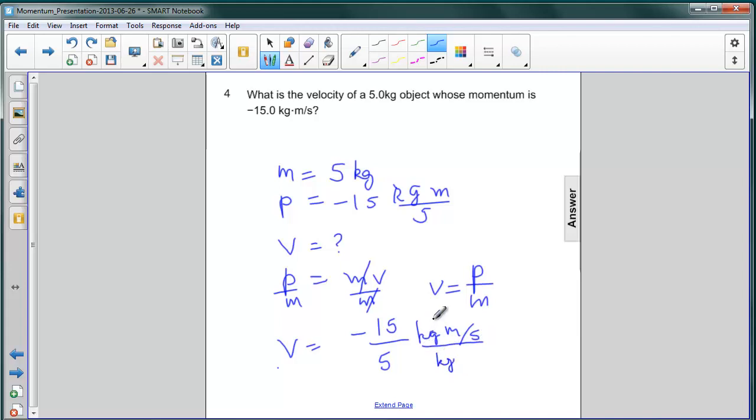And the kilograms cancel. So clearly we have meters per second left and 15 divided by 5 is 3. So our answer is negative 3 meters per second.